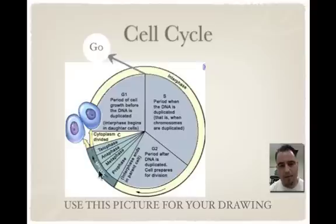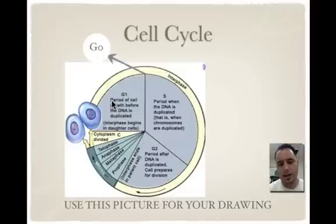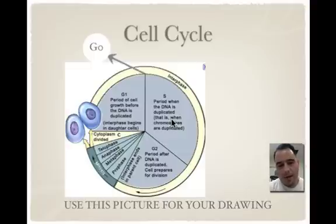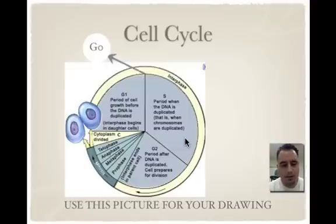We also have M-phase, which is made up of mitosis — or it could be meiosis — and cytokinesis. So a quick review: in interphase, the first part is G1 and the cell is just growing. Think of G as grow. And in interphase, S phase is when the DNA is duplicated or synthesized — copied, also called replication.